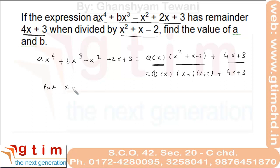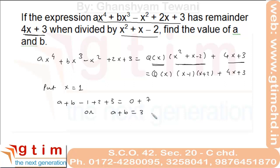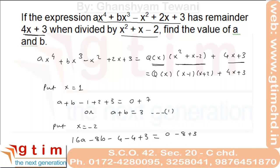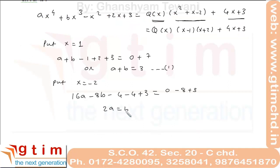By putting x equal to 1, we get a plus b equal to 3. Now put x equal to minus 2, and we get 2a equal to b. Solving equations 1 and 2, we get a equal to 1 and b equal to 2.